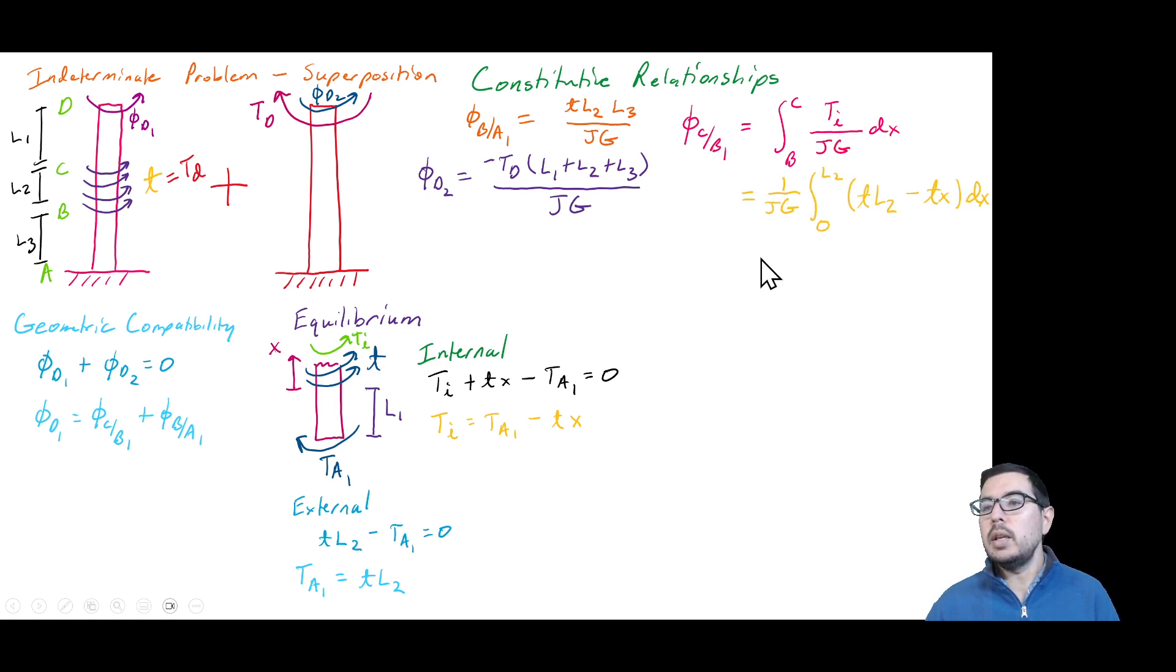So, now, we take the integral of this quantity, TA1, we also solve down here as TL2, so that's here, minus Tx, going from 0 to L2, and we're going to take the integral with respect to x. And we just move the 1 over JG outside. So, what is this integral yield? It yields that we have lowercase t, L2 squared, all over 2JG.